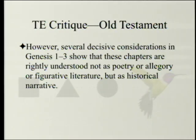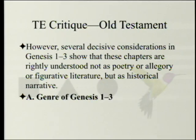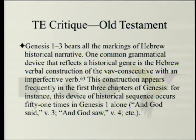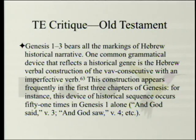However, several decisive considerations show that Genesis 1 through 3 should be understood not as poetry, allegory, or figurative literature, but as historical narrative. Genesis 1 through 3 bears all the markings of Hebrew historical narrative. One common grammatical device is the Hebrew verbal construction of the vav consecutive with an imperfect verb, which reflects a historical genre. This construction appears frequently in the first three chapters of Genesis — occurring 51 times in Genesis 1 alone: 'And God said, and God saw,' et cetera.